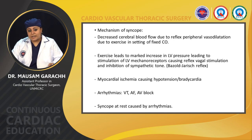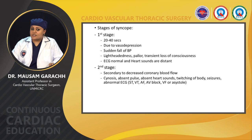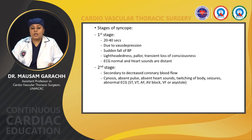Syncope at rest is caused by arrhythmias. The first stage of syncope, lasting 20–40 seconds, is due to vasodepression — sudden fall of blood pressure, lightheadedness, pallor, transient loss of consciousness; the ECG is normal and heart sounds are distant. In the second stage, secondary to decreased coronary blood flow, there can be cyanosis, absent pulse, absent heart sounds, twitching, seizures, and abnormal ECG — ST changes, ventricular tachycardia, AF, AV block, ventricular fibrillation, or asystole.